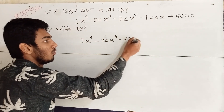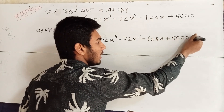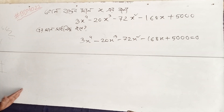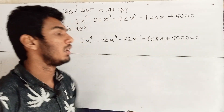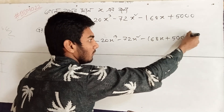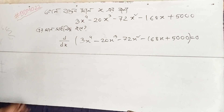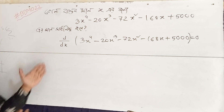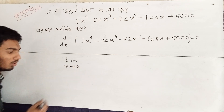We have the function 3x⁴ minus 20x³ minus 72x² minus 168x plus 5000, and that is equal to 0. We have to say that this whole ratio is 0. We will calculate the derivative — d/dx — and we will add that difference now.